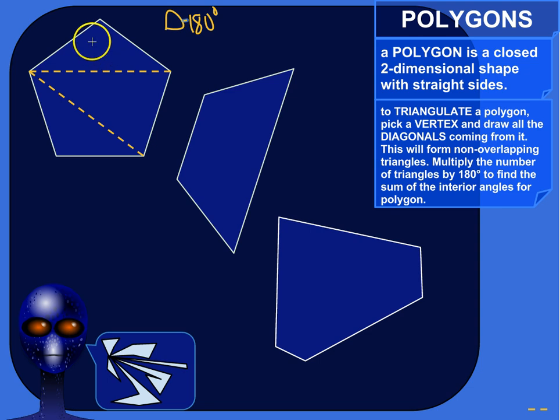So if I have three of them, three triangles, inside the shape, that means the interior angles of this polygon will add up to 3 times 180. Basically, they'll add up to the equivalent of three triangles. So 180 times 3 is equal to 540 degrees. So the interior angles of a five-sided polygon will add up to a total of 540 degrees.